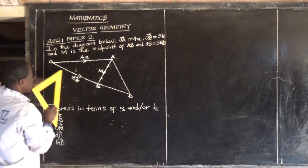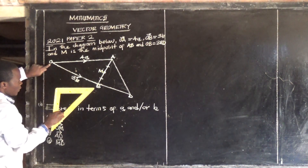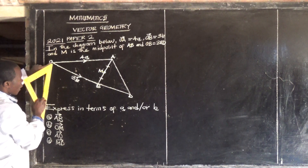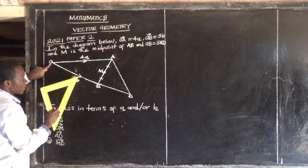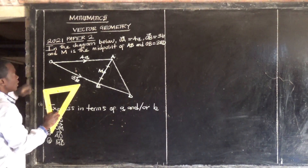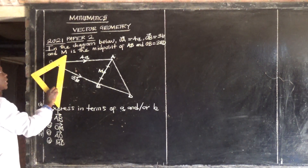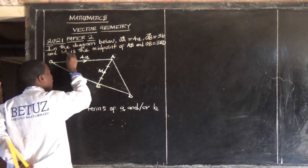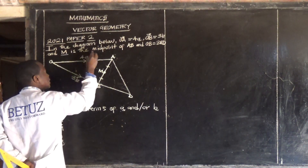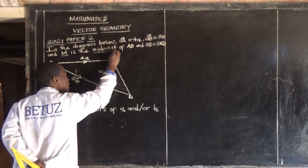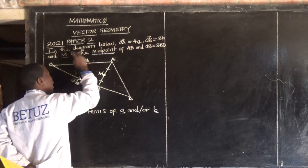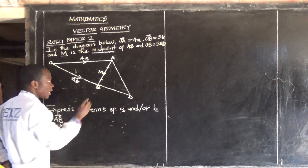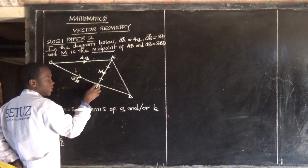Then OB, from O to B, this is 3 vector b. And L is the midpoint — very, very important point. L is the midpoint of AB.